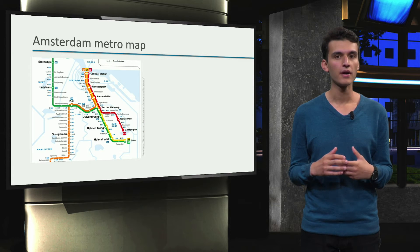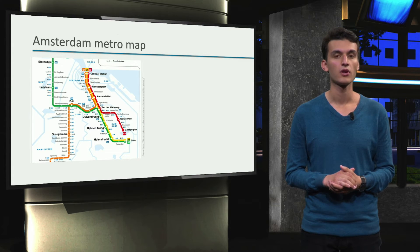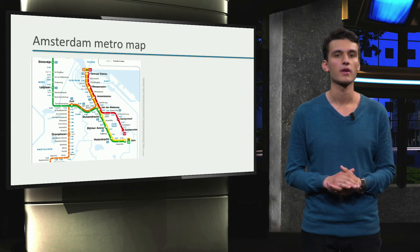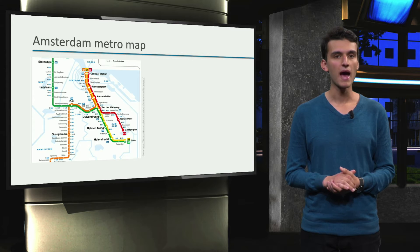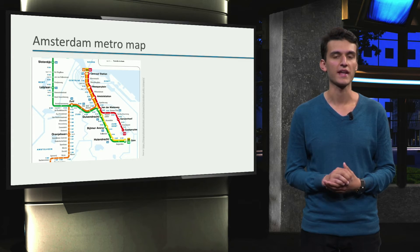I am in Amsterdam, and I want to go visit some friends. The first option I have is to take the subway. I found this map online. On this map I can see different stations and how they are connected.